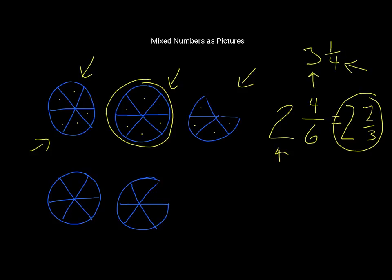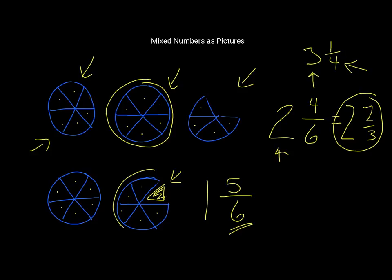Let's look at the next one. We've got a circle with 6 pieces in it, and then another part of a circle where there's a piece missing. We would represent that as a mixed number as being 1. Then we count the partial circle: 1, 2, 3, 4, 5 — so the numerator is 5. The missing piece would make it 6, and since there are 6 pieces in a complete circle, that's our denominator. So this is 1 and 5 sixths.